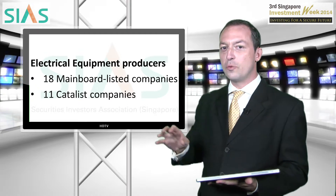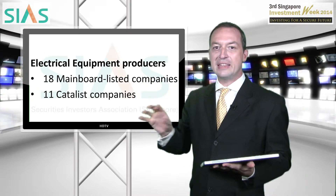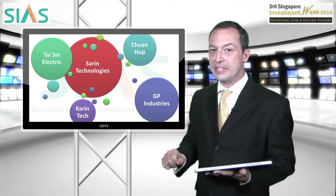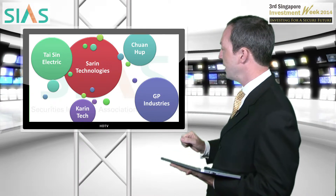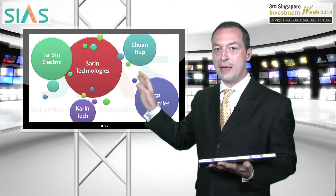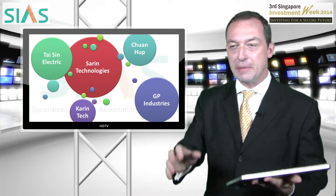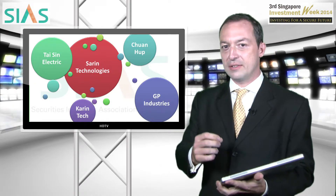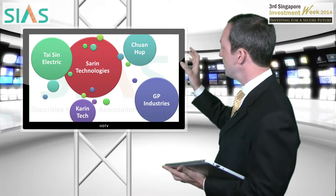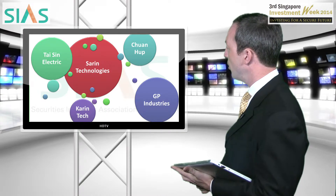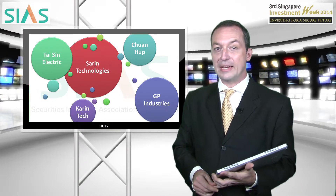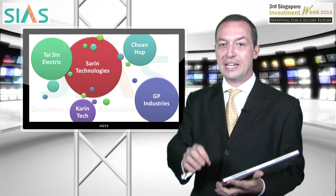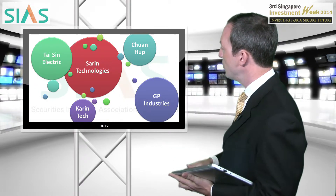Just to give you a flavor for what sort of businesses the companies in this index are in, here are the top four by market capitalization and Kareen Technologies, as identified by SGX MyGateway. In the middle is Sareen Technologies, the diamond cutting, precious stone cutting, and mapping and measuring company based in Israel — 100% of their revenues come from the electric equipment industry. We also have Chuan Hup, which still derives over 90% of their revenue from electrical equipment, with about 6% from other sources, but they're still in the index because they have more than 10% coming from electrical equipment.